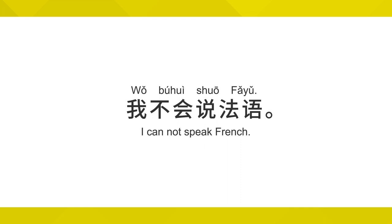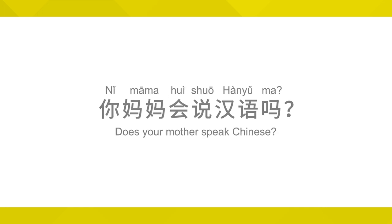When asking somebody a question, please remember that we need to add the question word 吗 at the end. For example, 你妈妈会说汉语吗？ An easy way to remember this is that 吗 is kind of like a question mark. And actually, when you look at the way the character is written, it kind of looks like a question mark. That can help you remember that when we ask a question, we must include 吗。